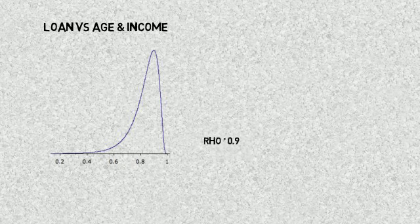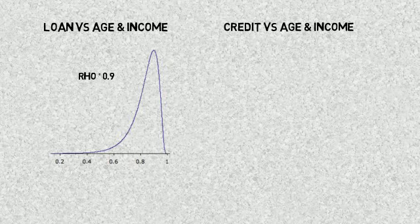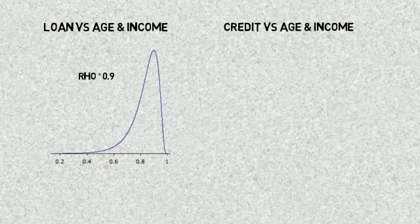In this graph, we have the probability of getting a loan versus the age and income, with Rho of 0.9. Here, we see the probability of getting a credit versus age and income. For this, Rho is 0.6.